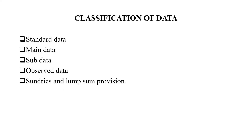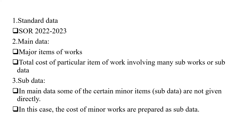In the schedule of rates, five types of data are mentioned: standard data, main data, sub data, observed data, and sundries or lump sum provisions. Standard data is the data provided in the schedule of rates published for the current year, such as the 2022–2023 edition published by the PWD.